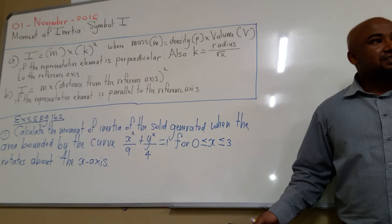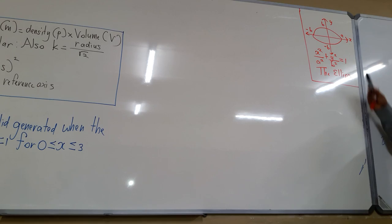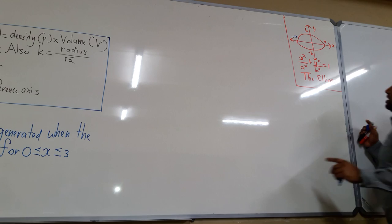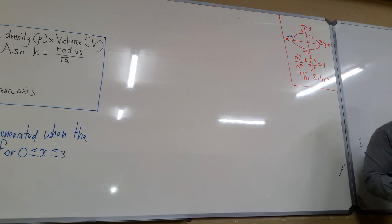We have to recognize that the graph is in the form x squared over a squared plus y squared over b squared is equal to 1. The x-intercepts will be plus a and minus a.